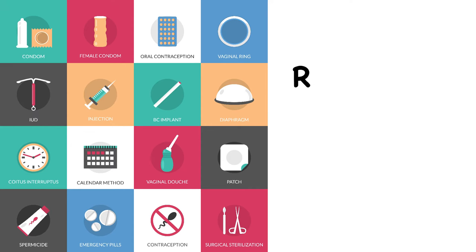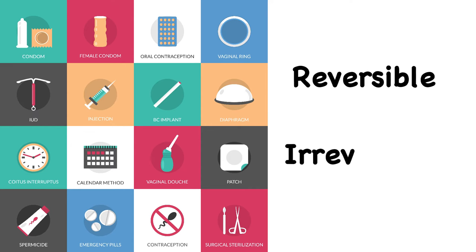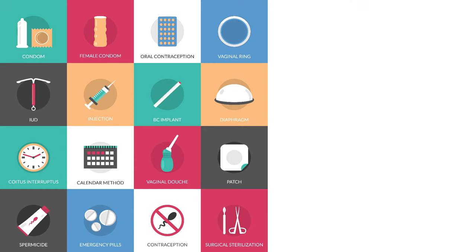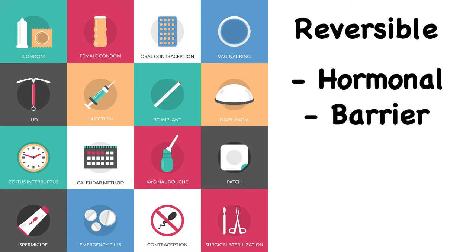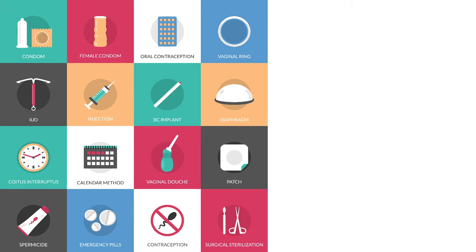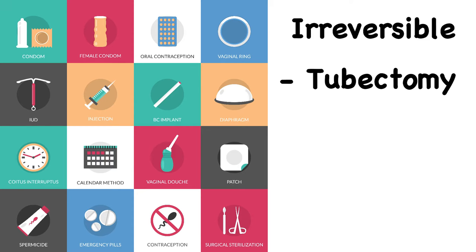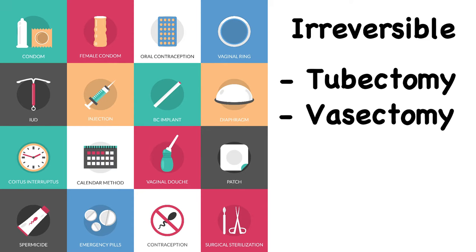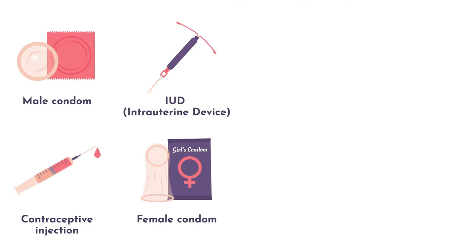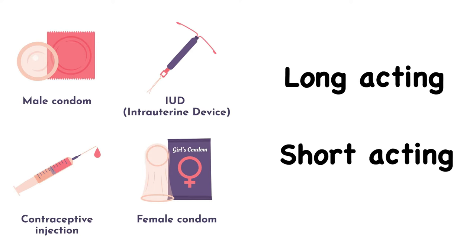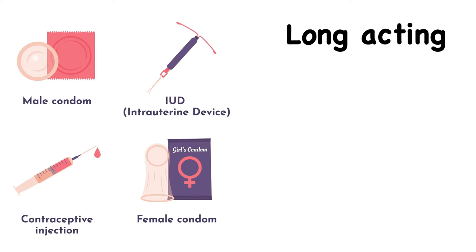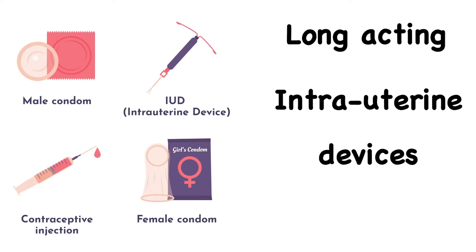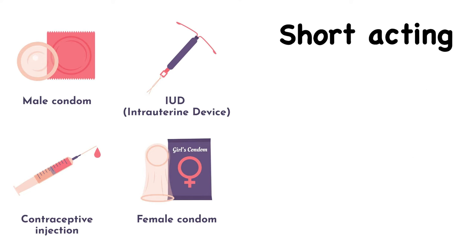Contraceptive methods may be reversible or irreversible. Examples of reversible contraceptive methods include hormonal or barrier methods. Irreversible methods include tubectomy and vasectomy. Contraceptive methods may also be long-acting or short-acting. Long-acting methods include intrauterine devices, and short-acting methods include pills.